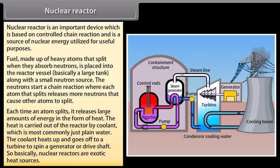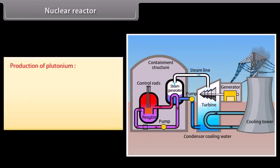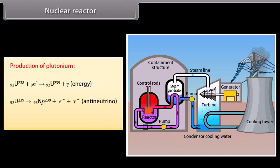In a generator or drive shaft. So basically, nuclear reactors are exotic heat sources. Production of plutonium: Some fast neutrons produced in the reactor are absorbed by uranium 238. As a result, it is converted into an unstable isotope uranium 239. Uranium 239 emits a beta particle and is converted to neptunium 239. Neptunium also emits a beta particle and is spontaneously converted into plutonium 239.